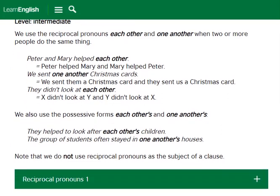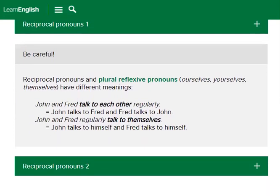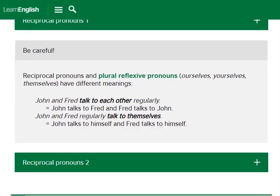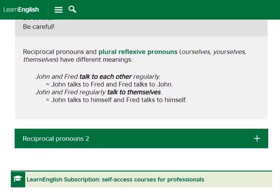Note that we do not use reciprocal pronouns as the subject of a clause. Be careful: reciprocal pronouns and plural reflexive pronouns — ourselves, yourselves, themselves — have different meanings. 'John and Fred talked to each other regularly' means John talks to Fred and Fred talks to John. 'John and Fred regularly talk to themselves' means John talks to himself and Fred talks to himself. Below is an exercise to check your understanding.